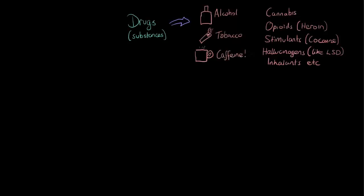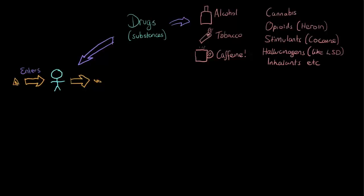When we consider drugs, there are several things we have to look at. We have to consider what happens when drugs enter the body and also what happens when they exit — and these are two different processes. The first process, when the drug actually goes into a human body, we can call intoxication. And if it exits after a period of prolonged use, we may experience something called withdrawal.